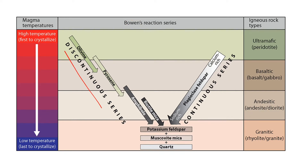The discontinuous series on the left is formed by mafic minerals that usually completely react to form totally new minerals with different crystal structures as magma cools. Therefore, olivine is the first to crystallize, but may completely react with the magma as it cools further to recrystallize into pyroxene. As the magma keeps cooling, pyroxene may react with the magma to produce hornblende, then hornblende to produce biotite.